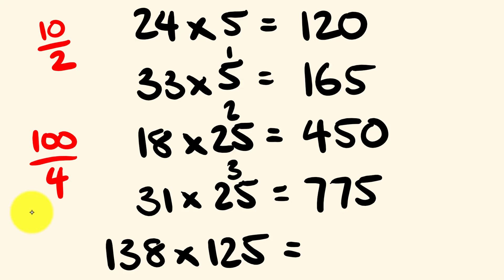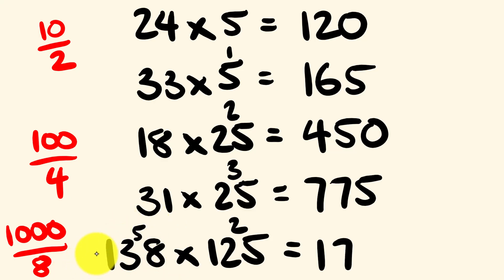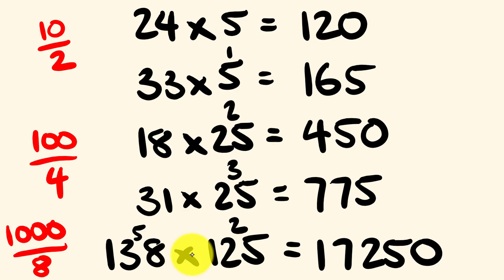Finally, 138 multiplied by 125. 125 is 1000 divided by 8, so let's divide by 8 first. 138 divided by 8: 13 divided by 8 is 1 with 5 remainder, making the result 17 with 2 remainder, since 8 times 17 is 136. 2 times 125 is 250. Our answer is 17,250.